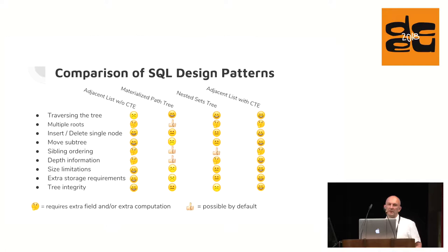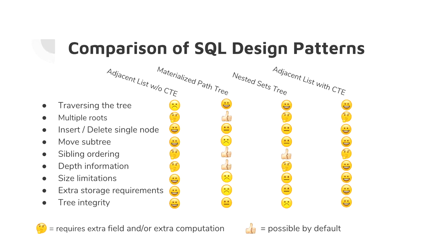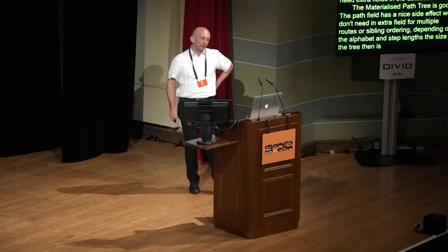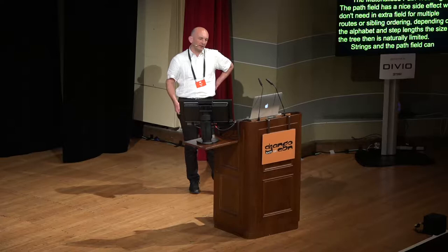Now let's compare the different solutions. The adjacent lists without common table expressions shines for all operations except for tree traversals. However, this is the operation we usually use most. It only requires one additional field pointing onto the parent node. Therefore we don't have any size limitations. If you need multiple roots and sibling ordering, you need extra fields in your database model. The materialized path tree is a good compromise for all operations. The path field has a nice side effect that we don't need extra fields for multiple roots or sibling ordering. Depending on the alphabet and step length, the size of the tree then is naturally limited. Strings in the path field can become very long. In addition we have to create a text index. This requires a lot of extra memory.